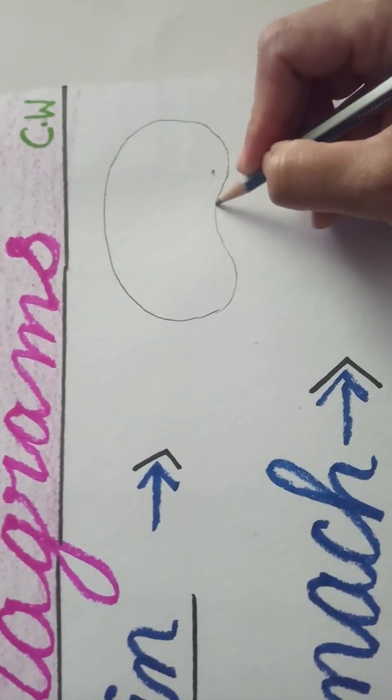Our next diagram that we will draw, stomach. So start here, draw two lines similar and then draw a shape like this. After that, yes, like this you will draw stomach. And our next is kidneys and it's very easy.